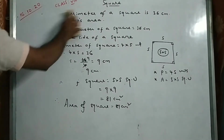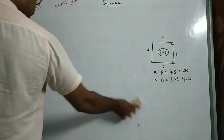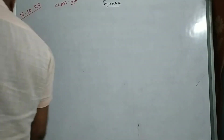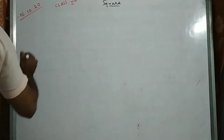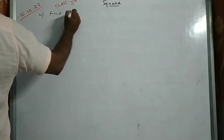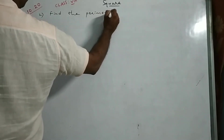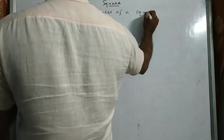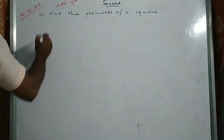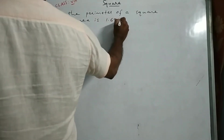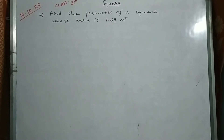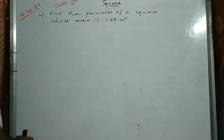See the second question: Find the perimeter of a square whose area is 1.69 square meters. What is the difference from the previous problem? In the previous problem, perimeter was given and we found area. Now, area is given and we should find perimeter.